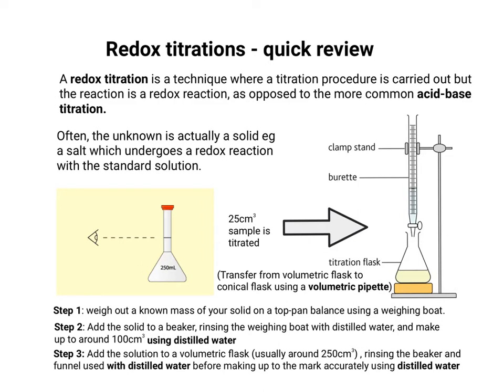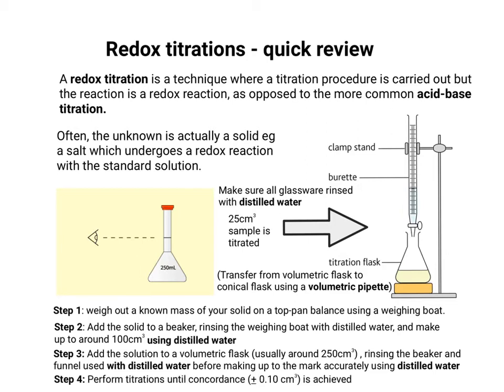Transfer from the volumetric flask to the conical flask using a volumetric pipette to ensure that your 25 cm³ is accurate. As always, make sure that your glassware is rinsed with distilled water as you go. Finally, perform your titrations until you achieve concordancy, which means an agreement between titres of 0.10 cm³.